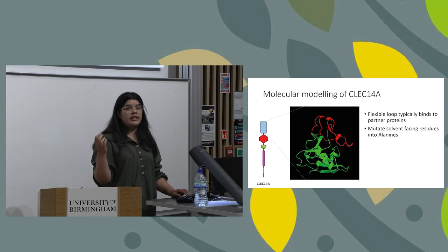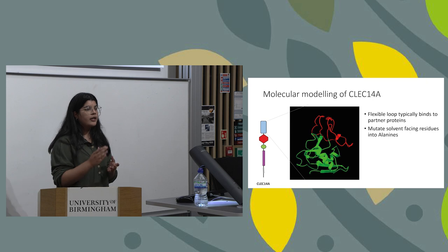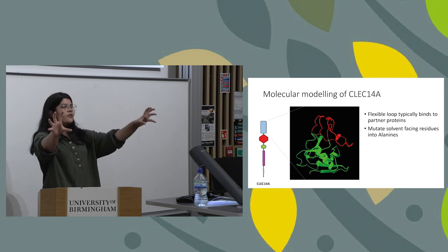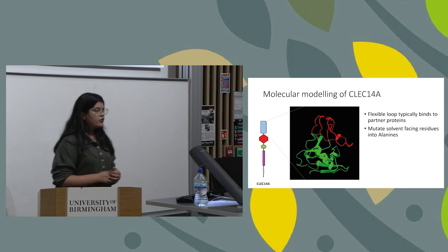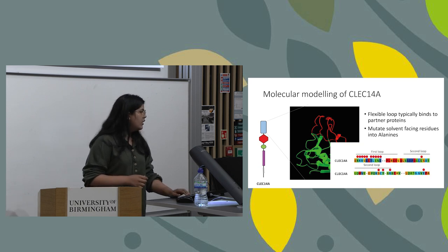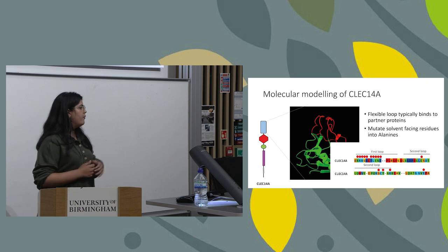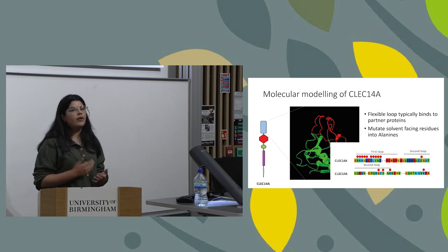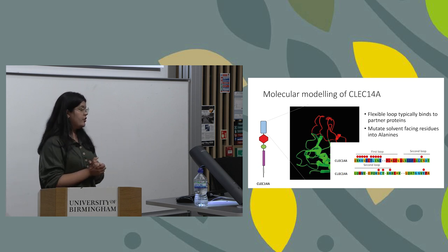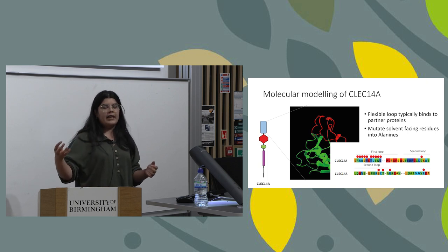We decided to start mutating residues within this loop-in-loop structure, targeting only amino acid residues projecting outward, as these would be the residues binding to other proteins. We changed them all to alanine, which is a simple amino acid. I went on a rampage and mutated both loops — we have loads of mutations. In the interest of time I won't go through every single mutation, but I will highlight some important ones used to study whether these mutant proteins were able to bind or not bind to multimerin 2.